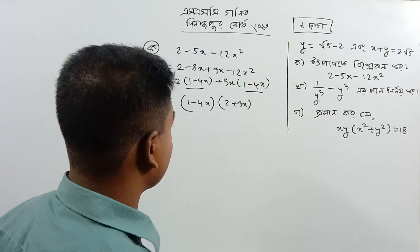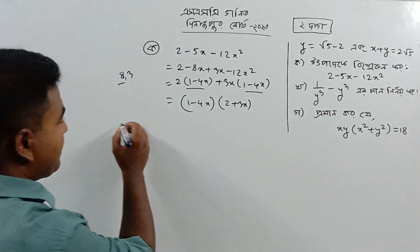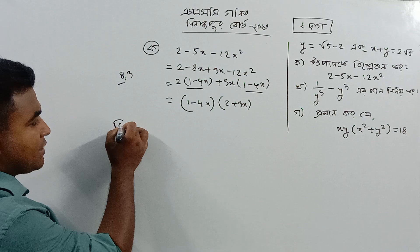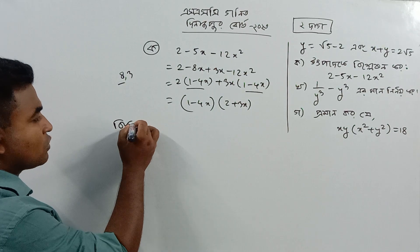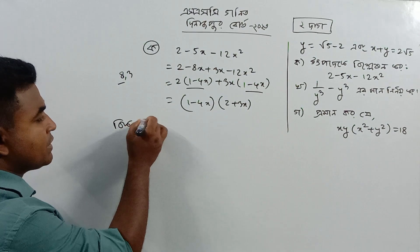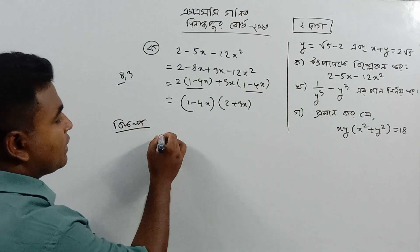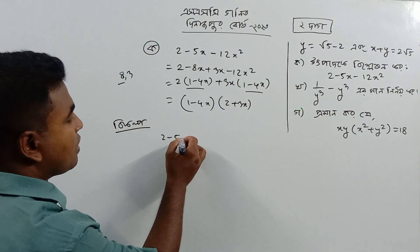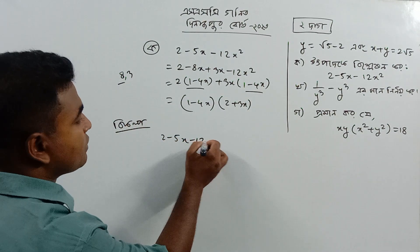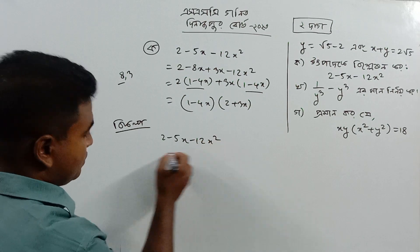1 minus 4x again — I can take common factor 1 minus 4x. Quality 3x there, 1 minus 4x common factor 1 minus 4x. I will give you a bit — store this one: 4x and 2, 3x and x.